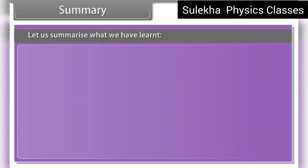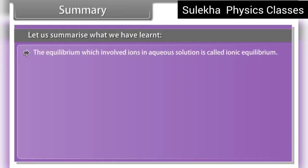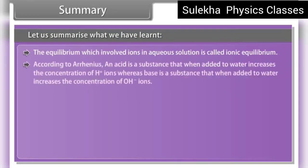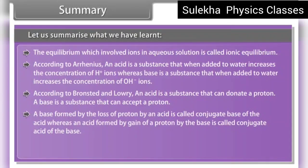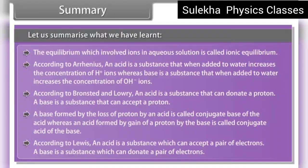Summary: the equilibrium which involves ions in aqueous solution is called ionic equilibrium. According to Arrhenius, an acid increases the concentration of H+ ions in water, while a base increases the concentration of OH− ions. According to Bronsted and Lowry, an acid donates a proton and a base accepts a proton. A base formed by loss of a proton from an acid is its conjugate base; an acid formed by gain of a proton by a base is its conjugate acid. According to Lewis, an acid accepts a pair of electrons and a base donates a pair of electrons.